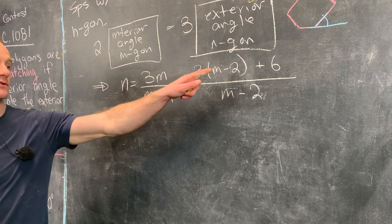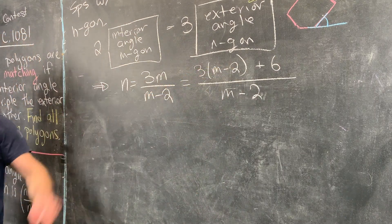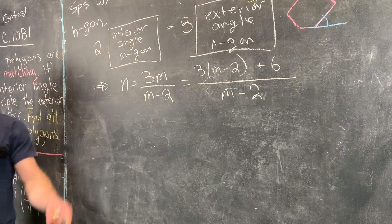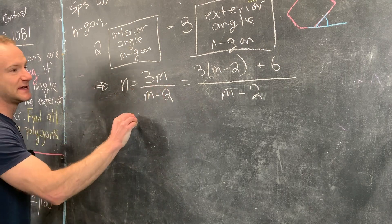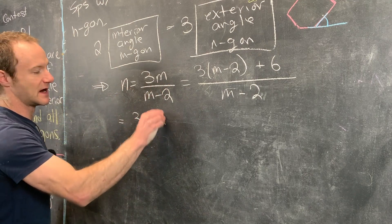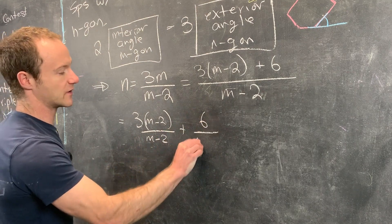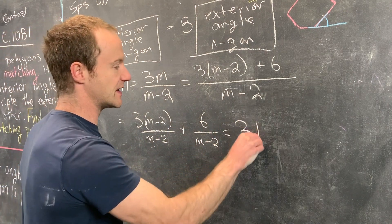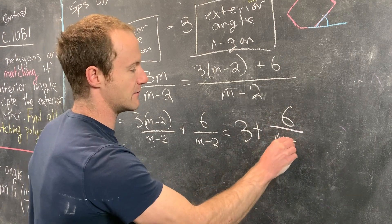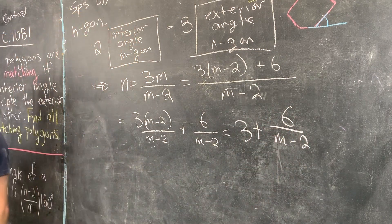But now we can break this into pieces. So we have 3(m-2)/(m-2) plus 6/(m-2). In other words, we have 3 + 6/(m-2).